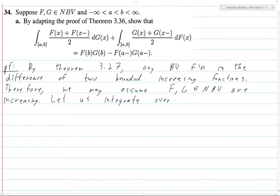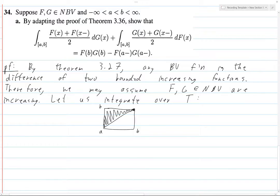Let us integrate over the region T. I'll draw it out: this is the x-axis, this is the y-axis, and this is the line y equals x. So we're integrating over that triangle — the region below the diagonal from a to b.